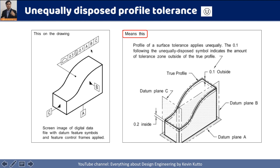In the third example, the value after the U symbol is 0.1, which is different from 0 and less than the total tolerance. This means the tolerance zone is distributed to both sides of the boundary: 0.1 is outside and the remaining 0.2 (0.3 minus 0.1) is inside. The unequally disposed profile symbol simply represents how much of your tolerance is distributed outside versus inside the given boundary.